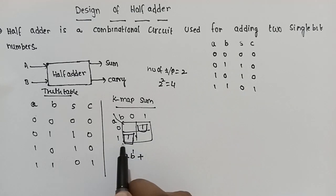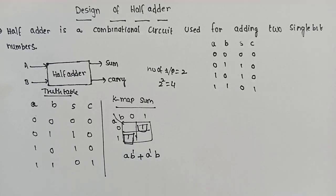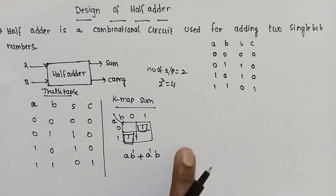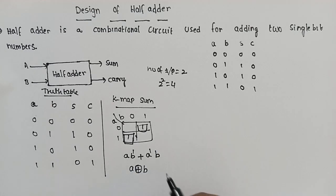From the K-map simplification for sum: A-dash-B plus A-B-dash, which is nothing but A exclusive-OR B. So the simplified Boolean expression for sum is A XOR B.